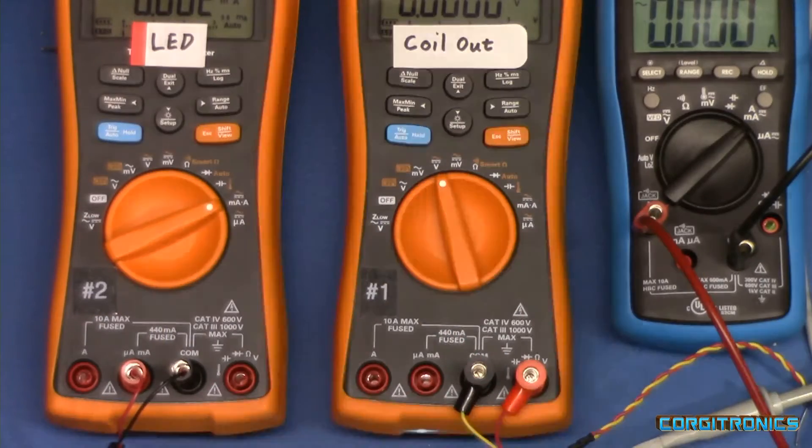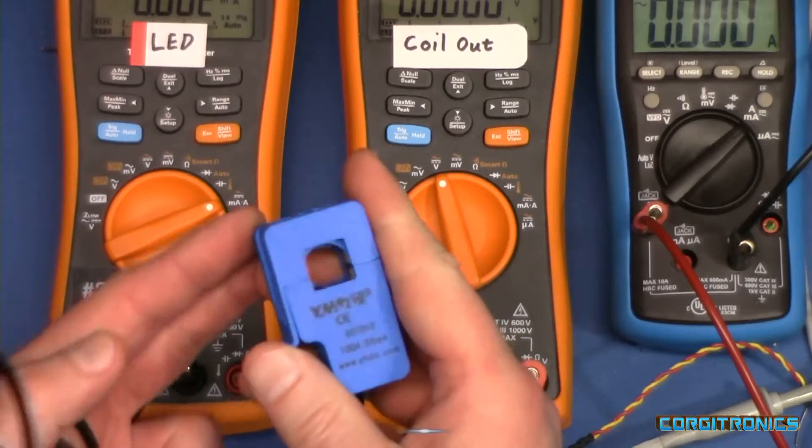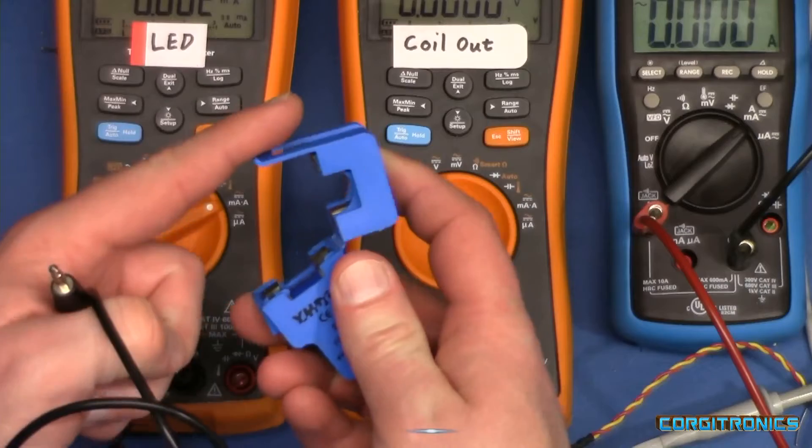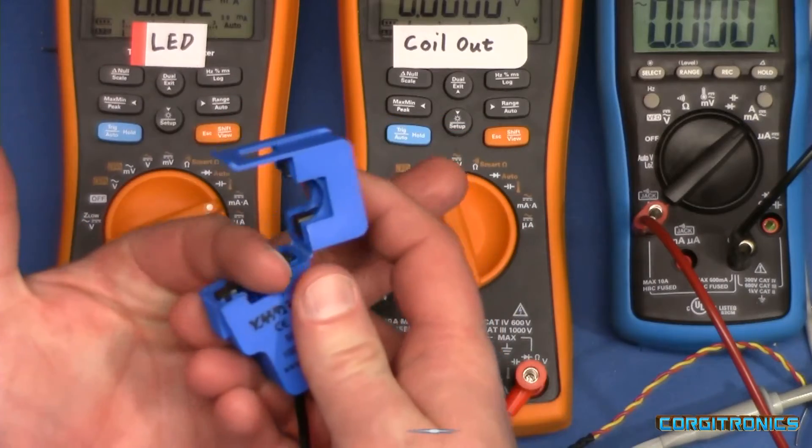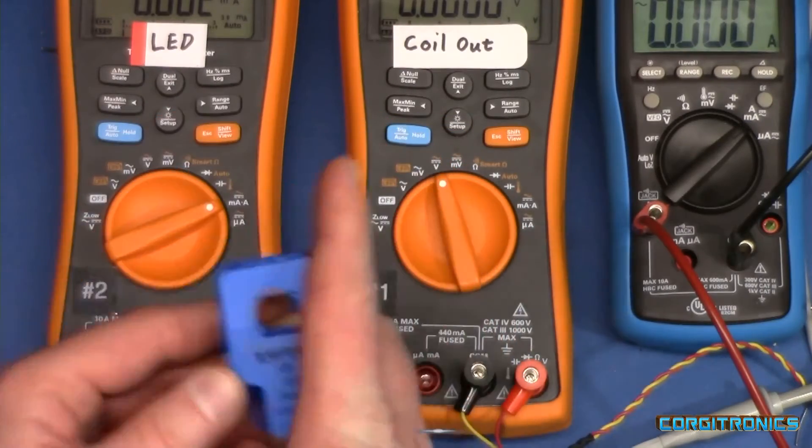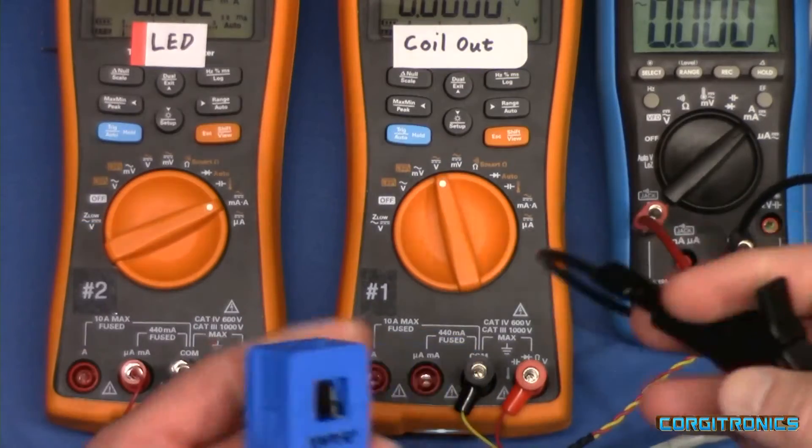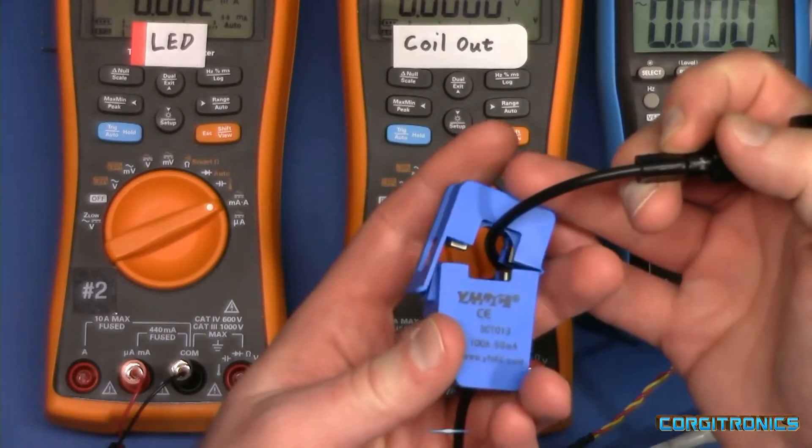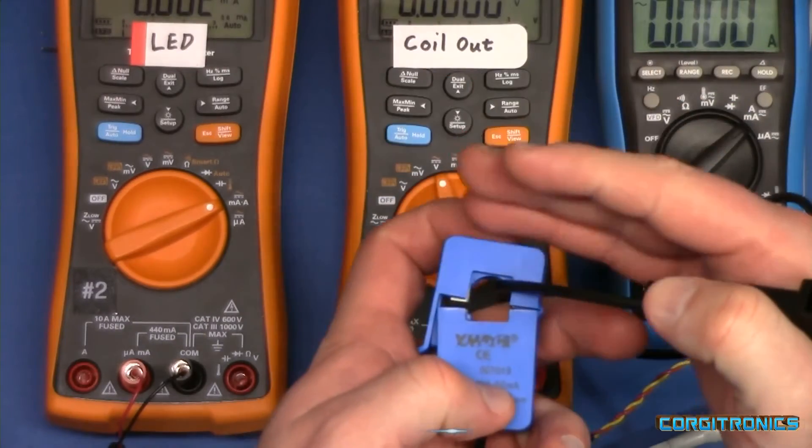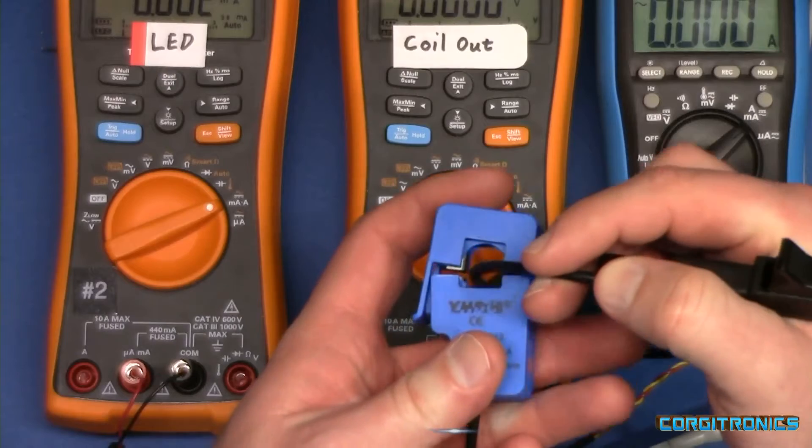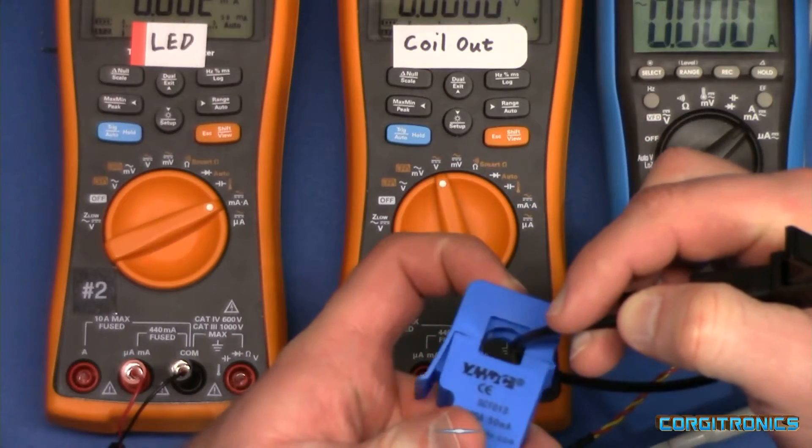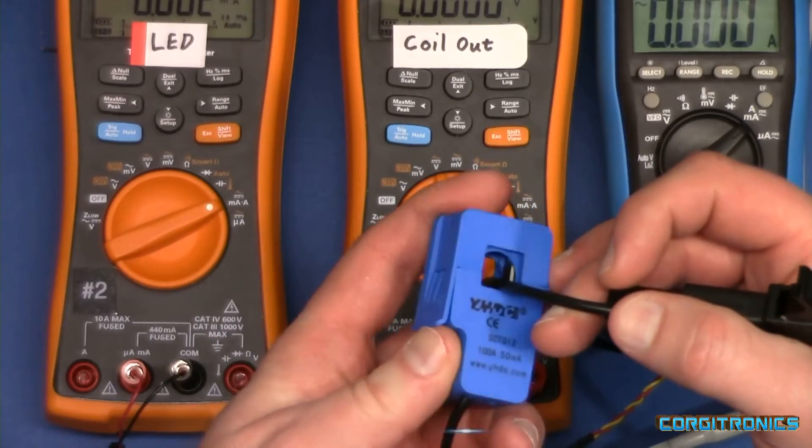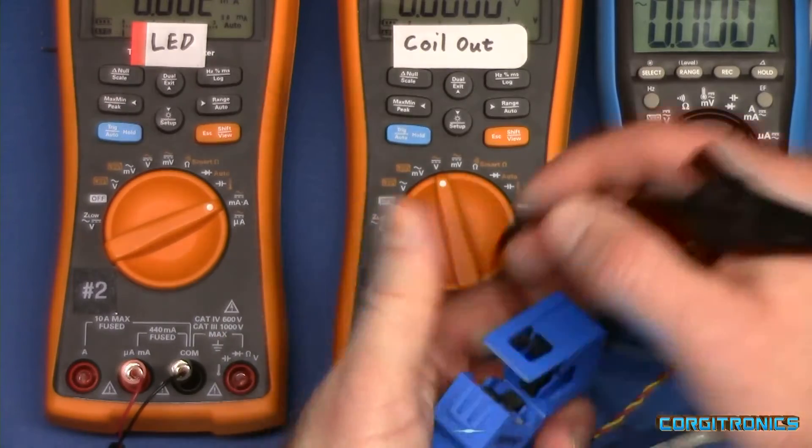However, a follow-up question came along about what's called a split core current transformer. It's named because the core opens up and you can put your wire through the middle and snap it down. The reason you would do that is if you could not cut your wire, you just need to split your hot neutral lines apart, and then you could slip this core transformer around it and hook it right up. It works great. They're used in a lot of places. Let's see if it'll work for this.